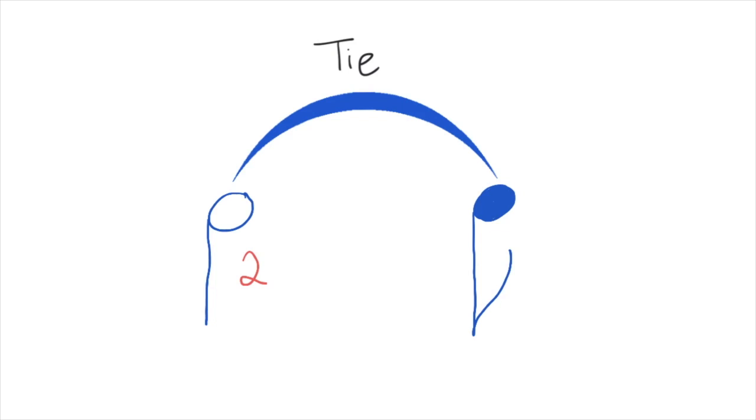This is a minim, and this is a quaver. The minim is worth two beats, and the quaver is worth half a beat, so this is worth two and a half beats.